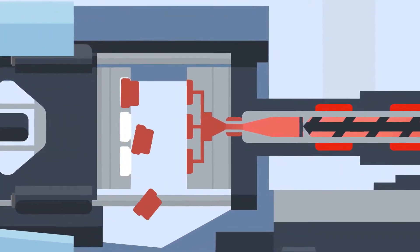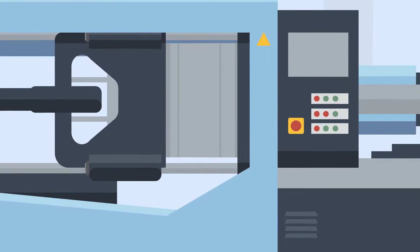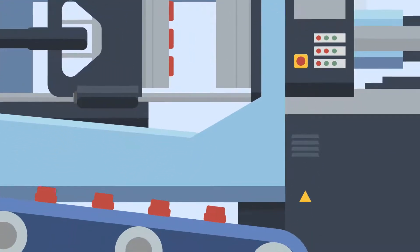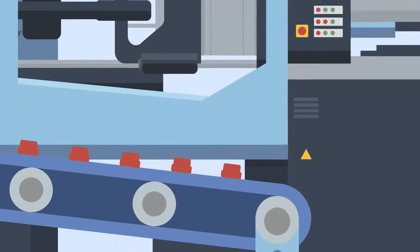Once the set cooling time has passed, the mould opens and ejector pins or plates push the new parts out of the tool. These then fall onto a conveyor belt ready to be finished and packed.